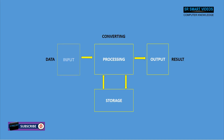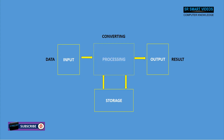Input is considered to be the first function of a computer system. This is the process of entering data. Processing is one of the main functions of the computer system. This is the process of converting raw data into useful information.